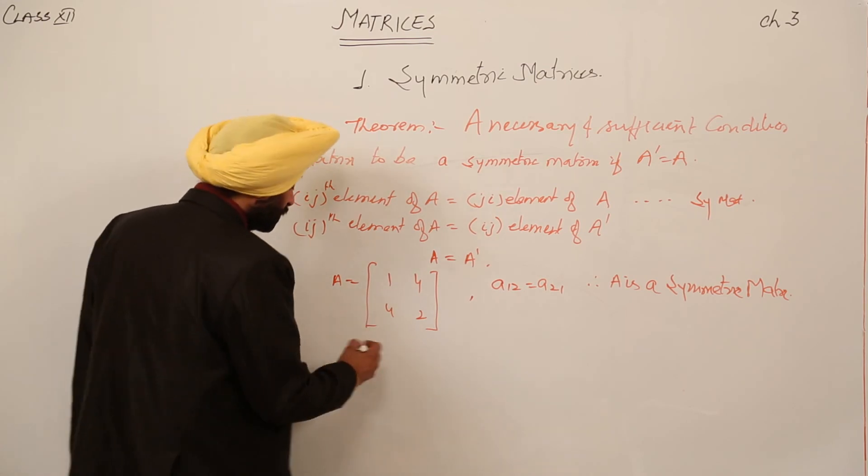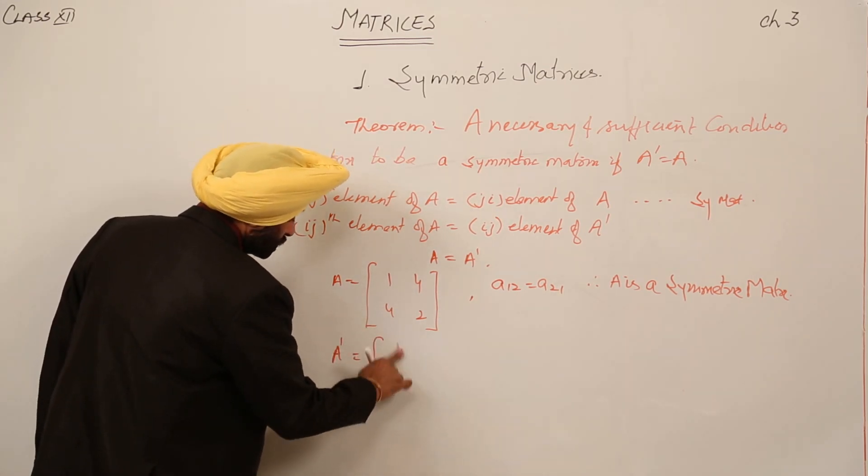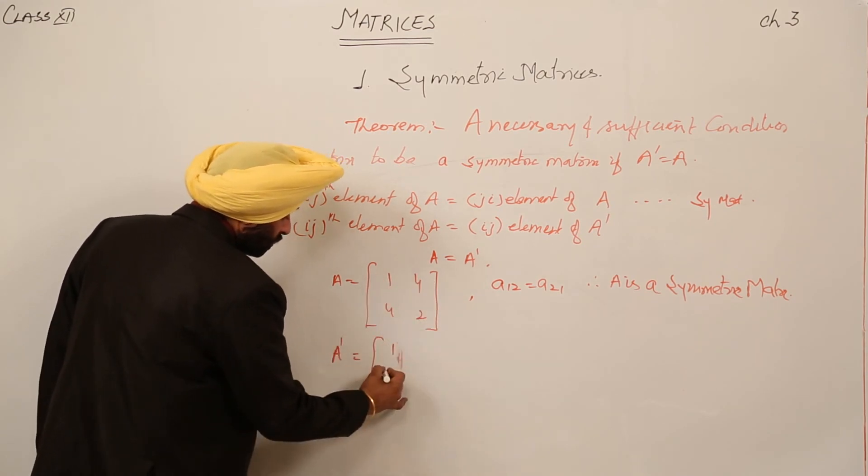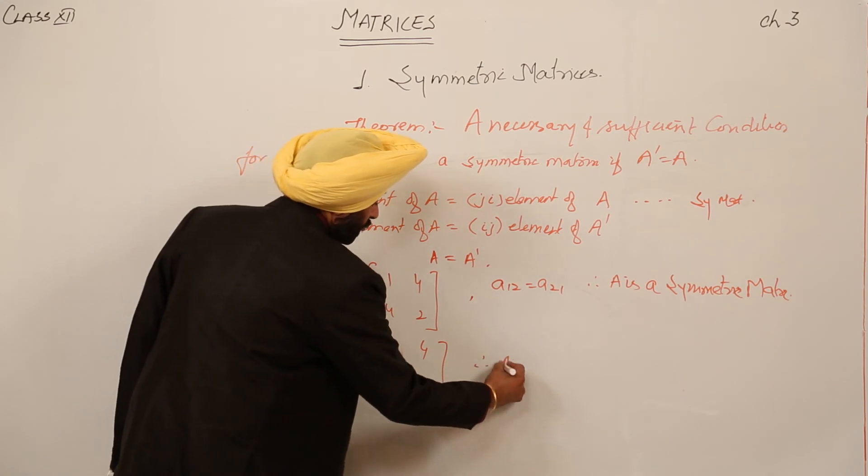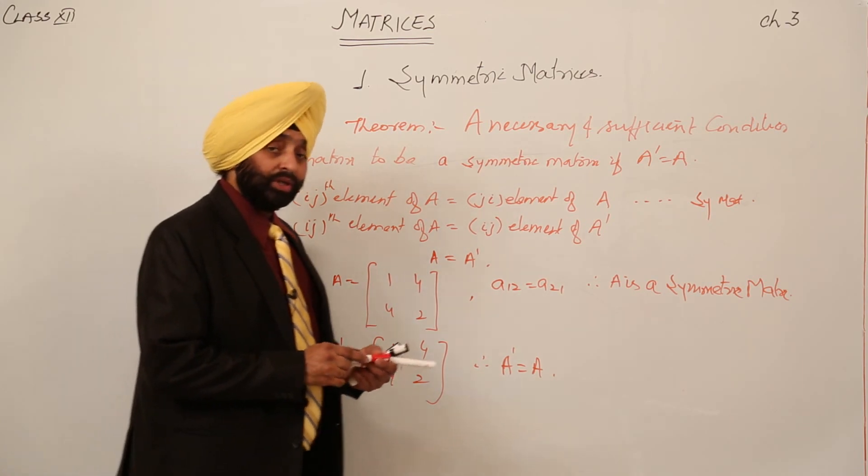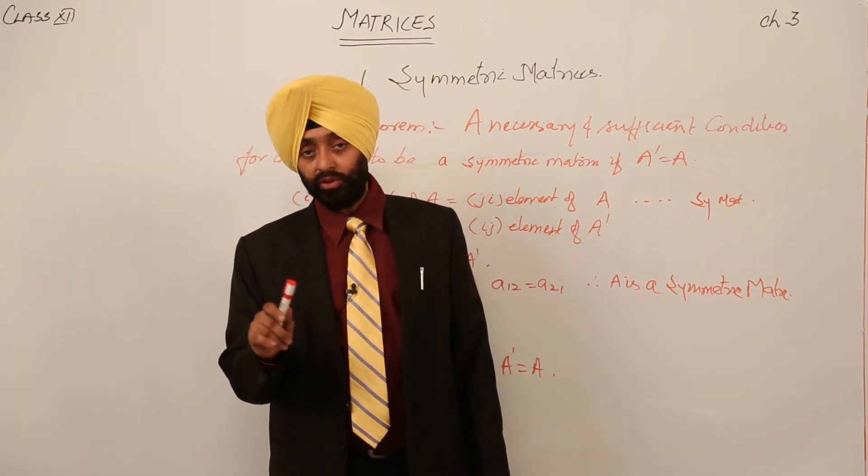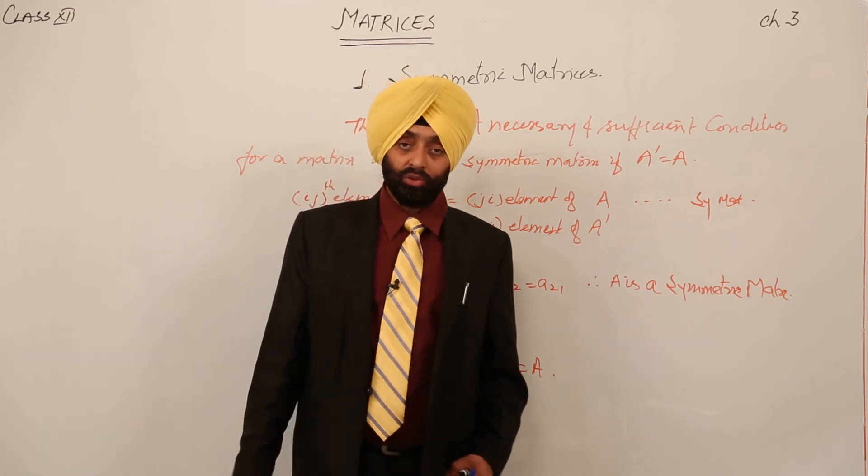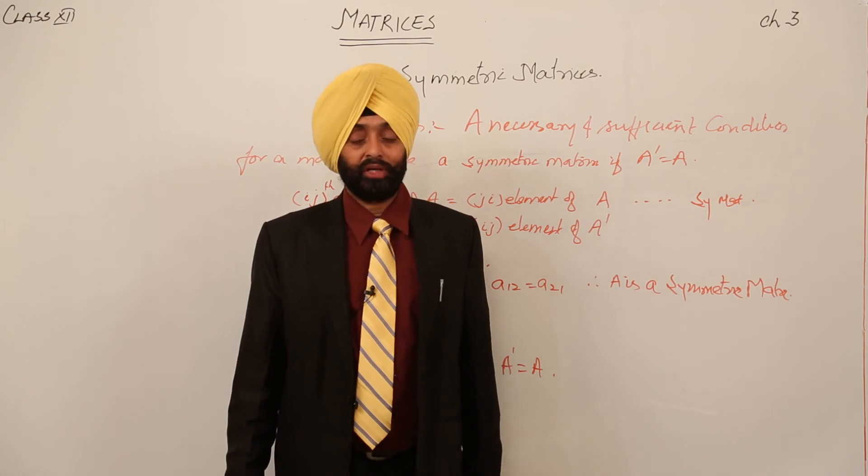What is transpose of this? Transpose is equal to 1, 4, 4, 2. Therefore, A transpose is equal to A. So what are the two conditions for this matrix? Number 1, ijth element is always equal to jith element. And number 2, transpose of A is equal to A is also a symmetric matrix.